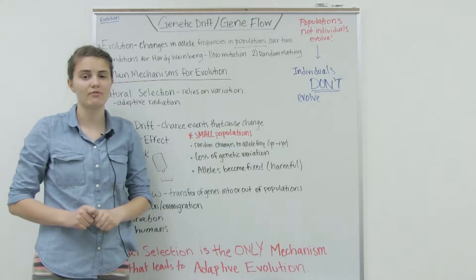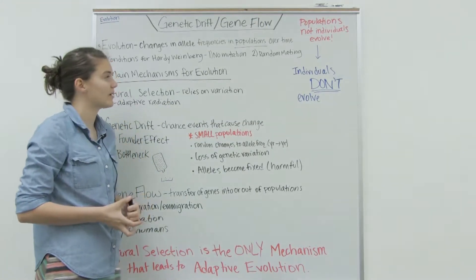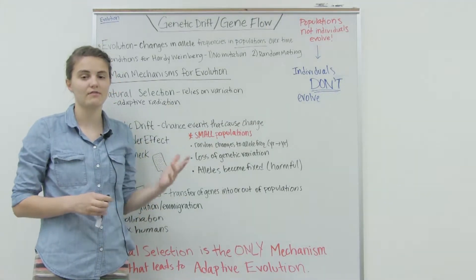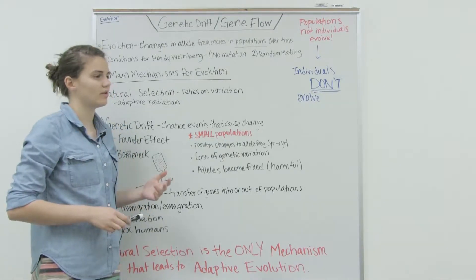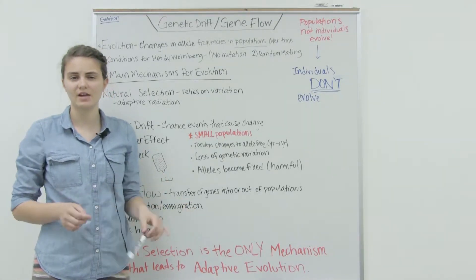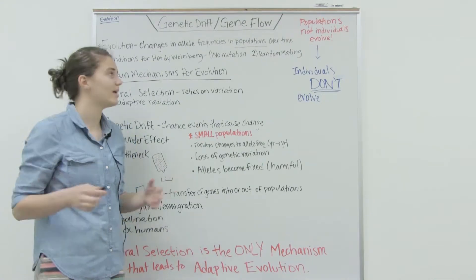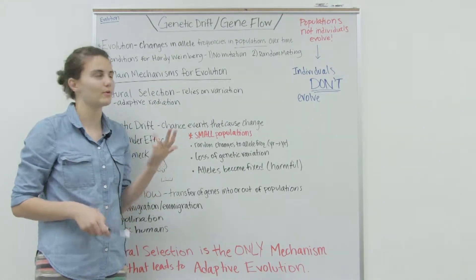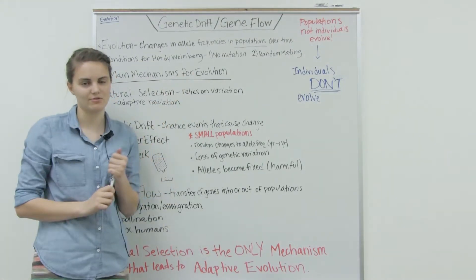Random mating - if we don't have random mating, we have non-random mating, it won't change the allele frequency. It may change the frequency of homozygous and heterozygous individuals, but that's not changing the frequency, which means we are not having evolution happen.